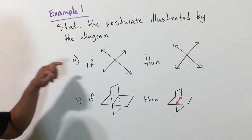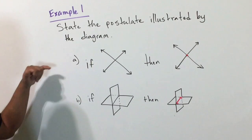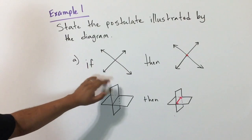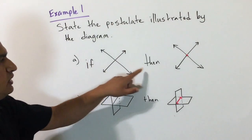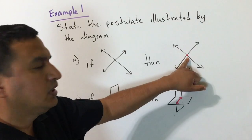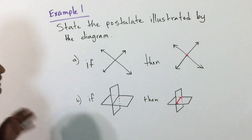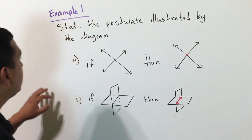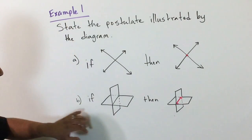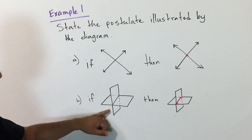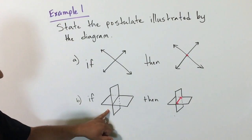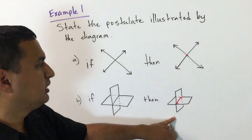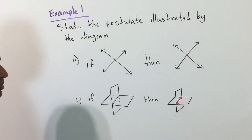Example one says: state the postulate illustrated by the diagram. For part A, if two lines are intersecting and their intersection is a point, that is the line-intersection postulate. For part B, this is an illustration of two planes intersecting, so if two planes intersect, their intersection is a line — that refers to the plane-intersection postulate.